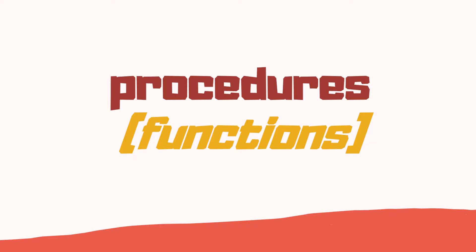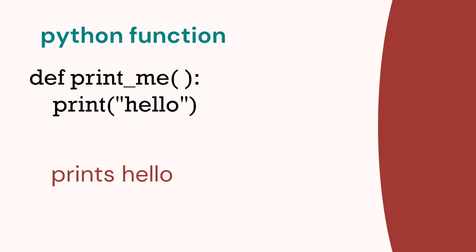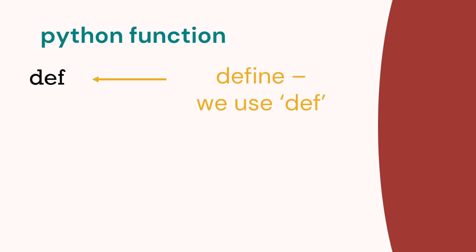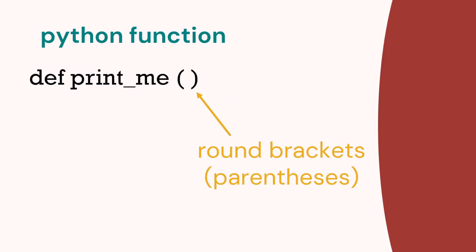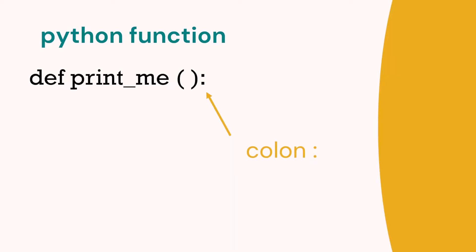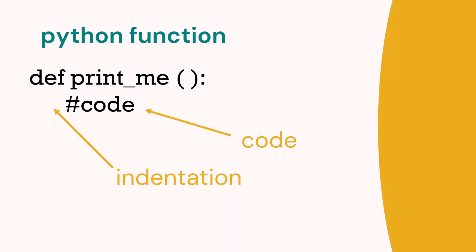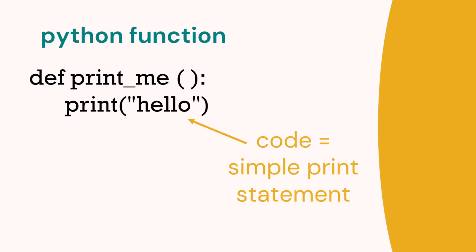Let's look at these in code. Here we have a Python function — it's quite simple and this one just prints hello. What parts are in this function? We start off with the keyword DEF, then we've got a function name, then round brackets, a colon, and underneath we've got some code which is indented. For example, here we've got print hello.